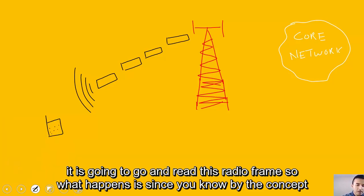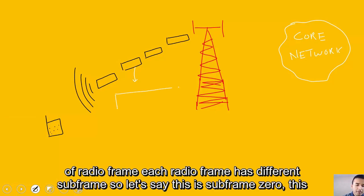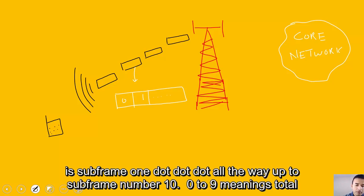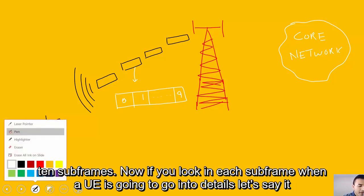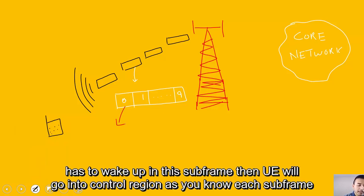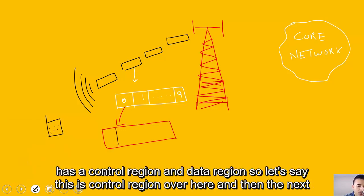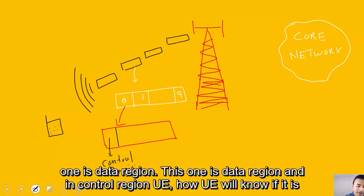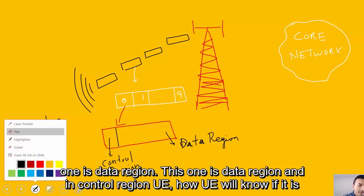By the concept of radio frame, each radio frame has different subframes. This is subframe 0, this is subframe 1, all the way up to subframe number 10, 0 to 9, meaning total 10 subframes. In each subframe, when a UE wakes up, it will go into control region. Each subframe has a control region and data region. This is control region here, and the next one is data region.